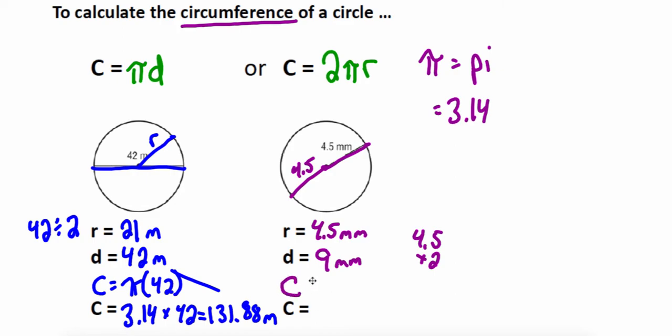For circumference let's try our other formula. Since we know the radius, let's do 2 times pi times my radius 4.5. You could have also used the other formula and plugged in the diameter. So I'll do 2 times 3.14 times 4.5. That gives me 28.26 millimeters. You find either your radius or your diameter and then plug it into the appropriate formula.